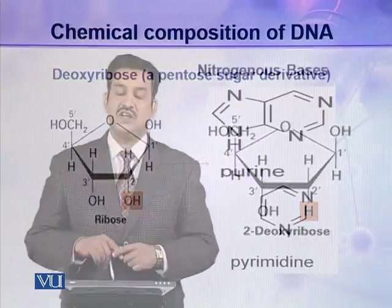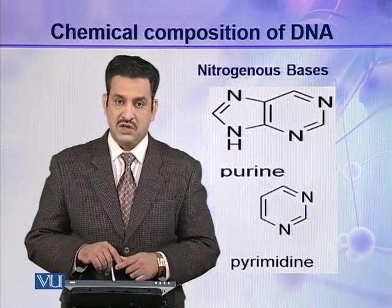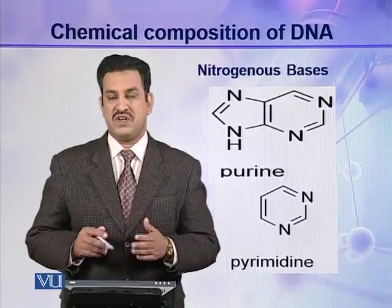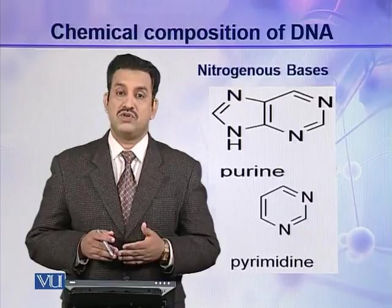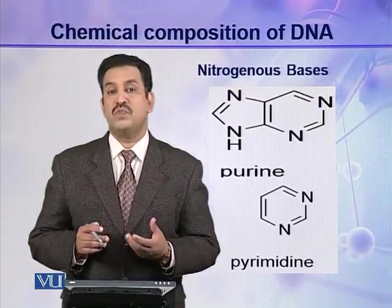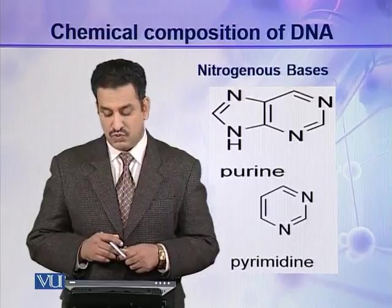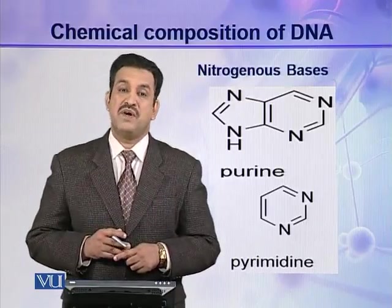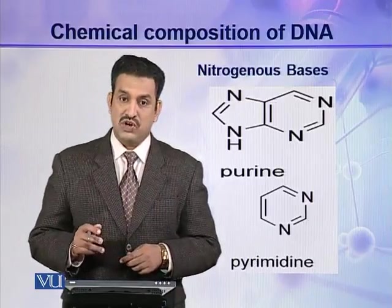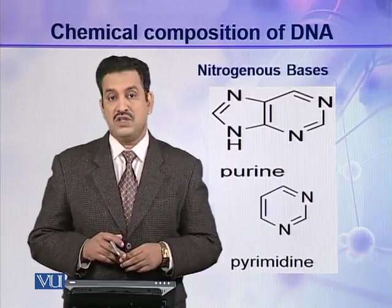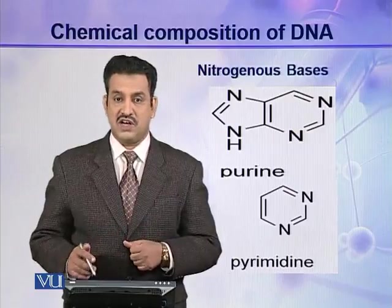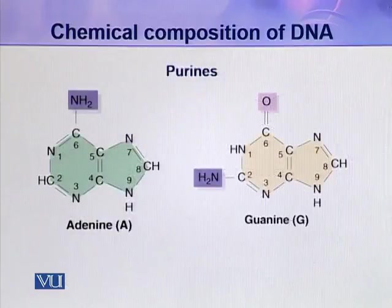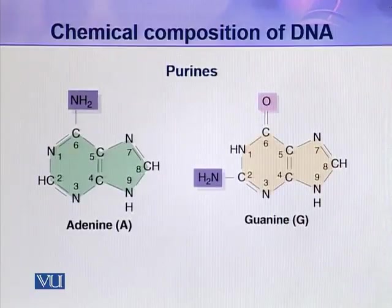The second component is the nitrogenous base. Four different types of nitrogenous bases are present in a DNA molecule, and they are derived from two parent compounds: purines and pyrimidines. Adenine and guanine are the two purines, both derived from the parent compound purine.